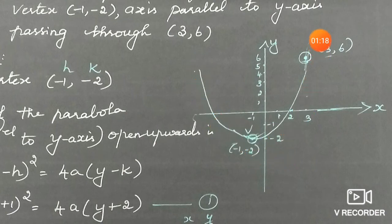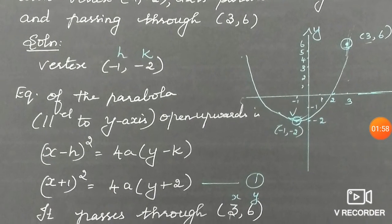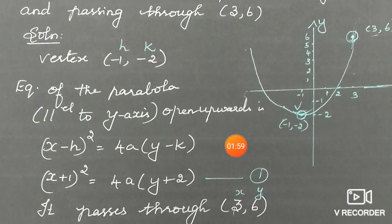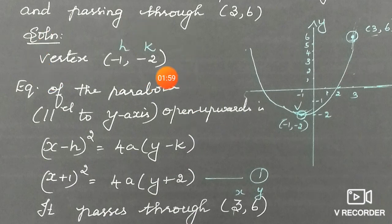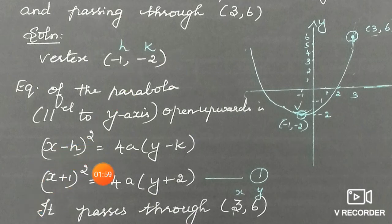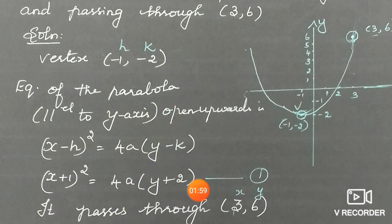For a parabola open upwards with vertex not at the origin, the formula is (x - h)² = 4a(y - k). The vertex is (-1, -2), so h = -1 and k = -2. Substituting: (x + 1)² = 4a(y + 2). This is equation (1), but A is still unknown.